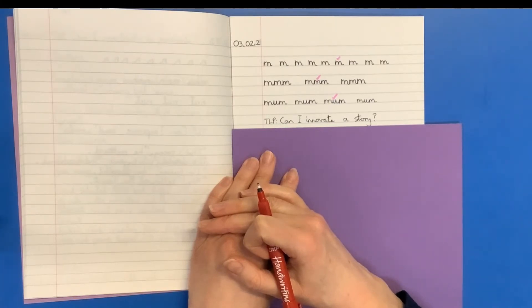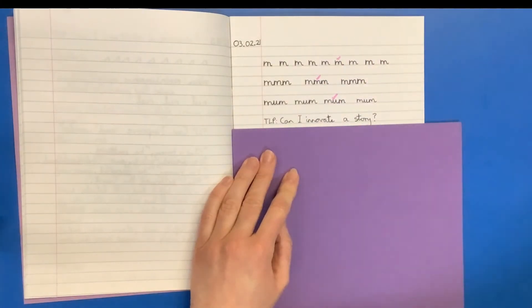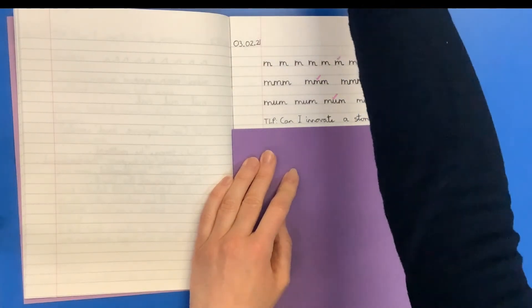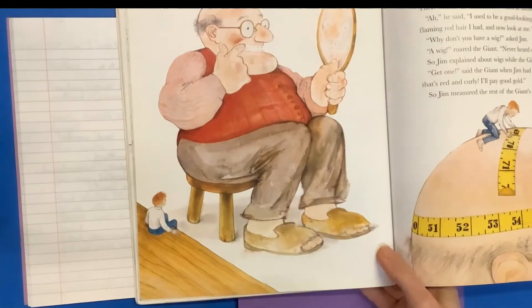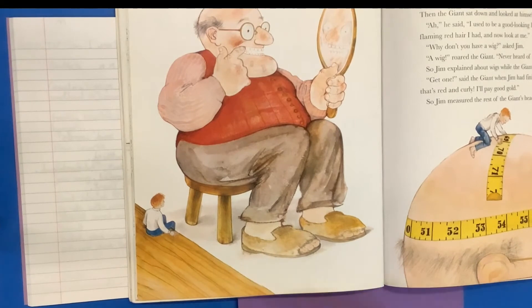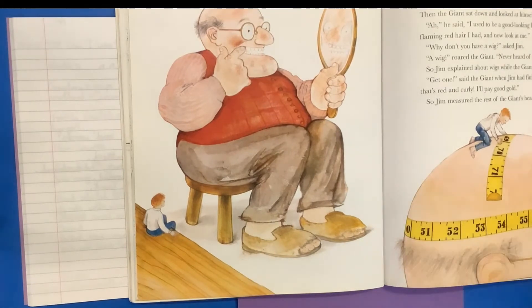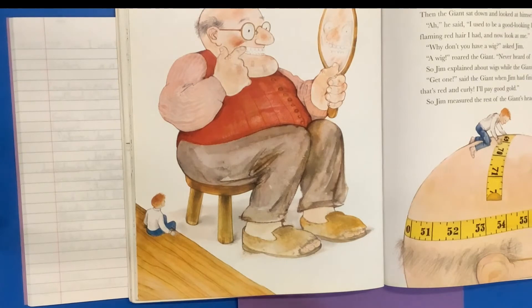So let's have a little look at the giant and Jim. Here they are. So this is the point in the story where the giant has got his glasses, his false teeth. But now he decides that actually what he'd like to make him look even more handsome is his red curly hair. So this is where Jim suggests that he wears a wig.